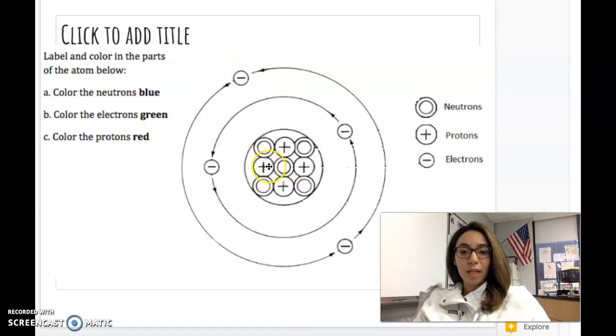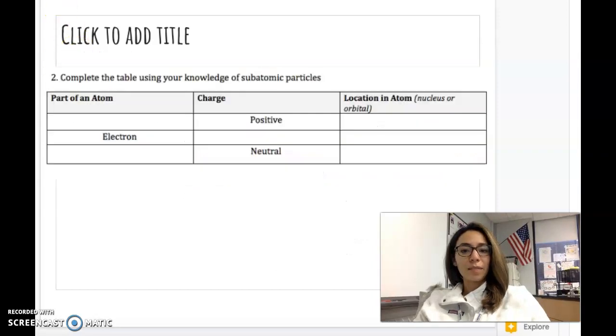Remember, the protons have a plus sign because they have a positive charge. The electrons have a minus sign because they have a negative charge. The neutrons do not have a charge. Now let's see if you can complete this practice. Pause the video and give it a try.